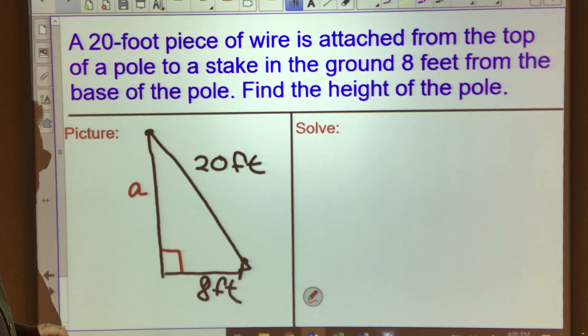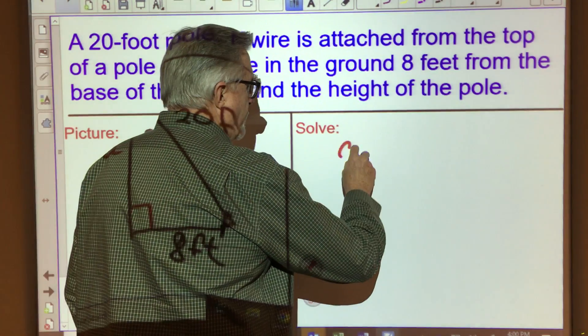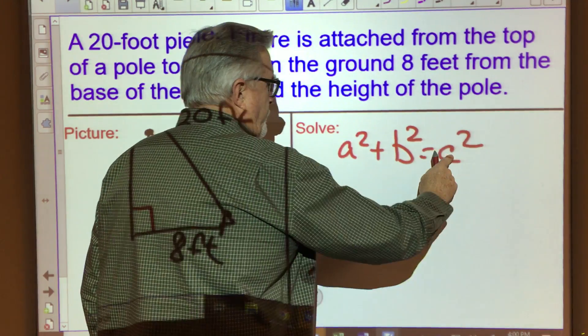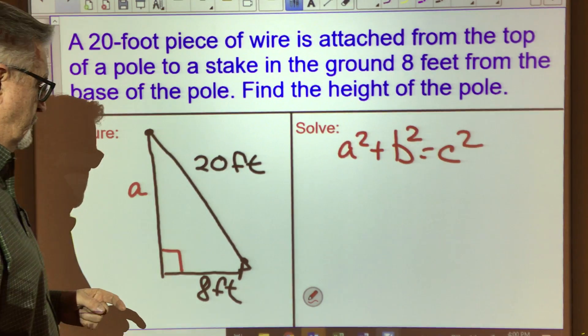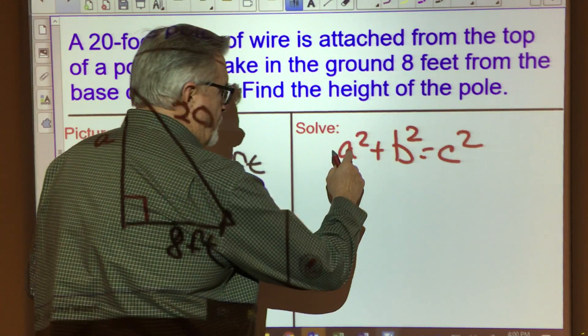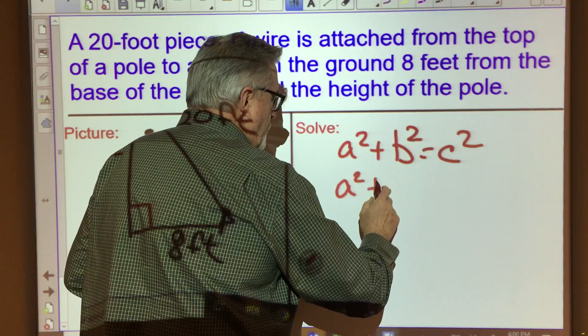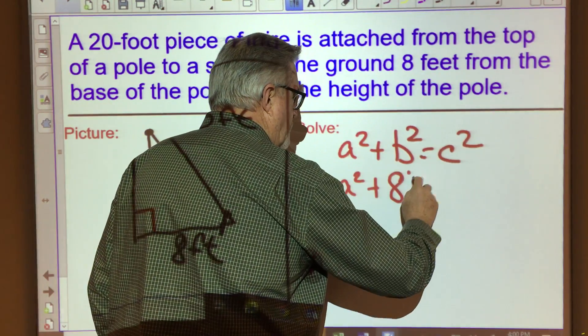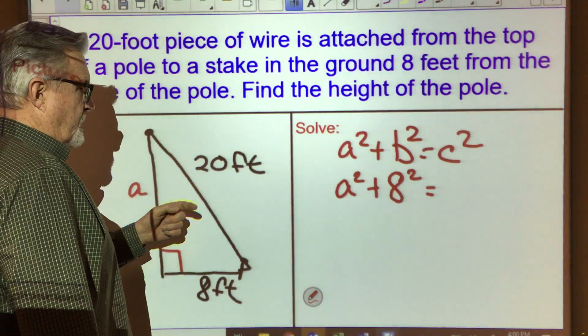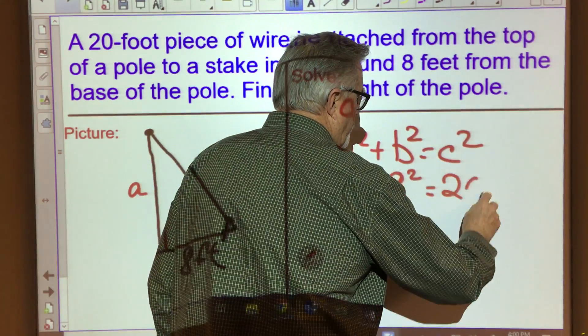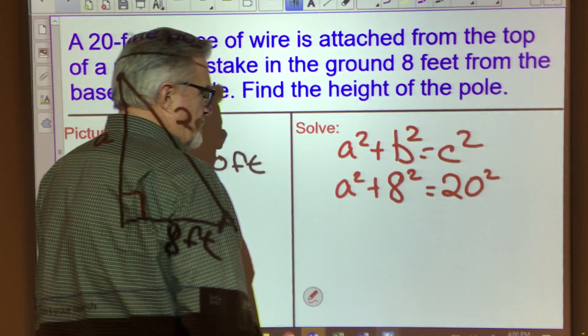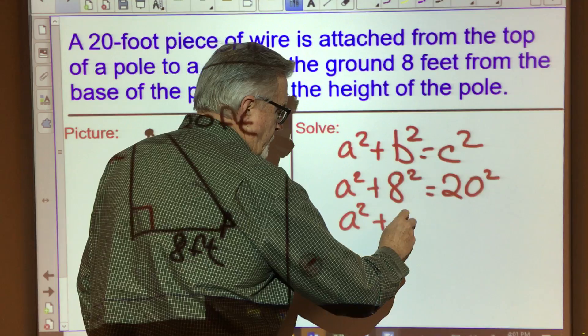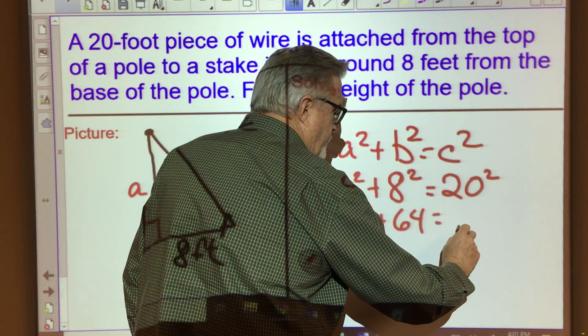So when we plug this into our Pythagorean theorem, we have a² + b² = c². We know that c is always the hypotenuse. So when we plug this in, we don't know what a is, so we're going to leave it as a². We're going to substitute 8 in for b, so we have 8 squared. And for c, we're going to substitute in 20, so we have 20 squared. Let's go ahead and simplify and do the squaring that we can. So that would be a² + 64 = 400.